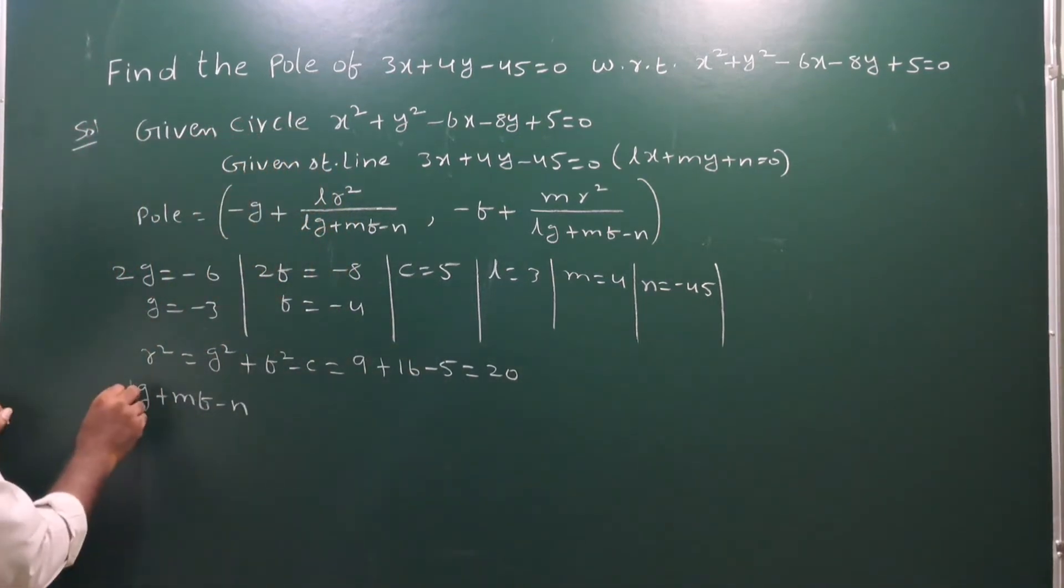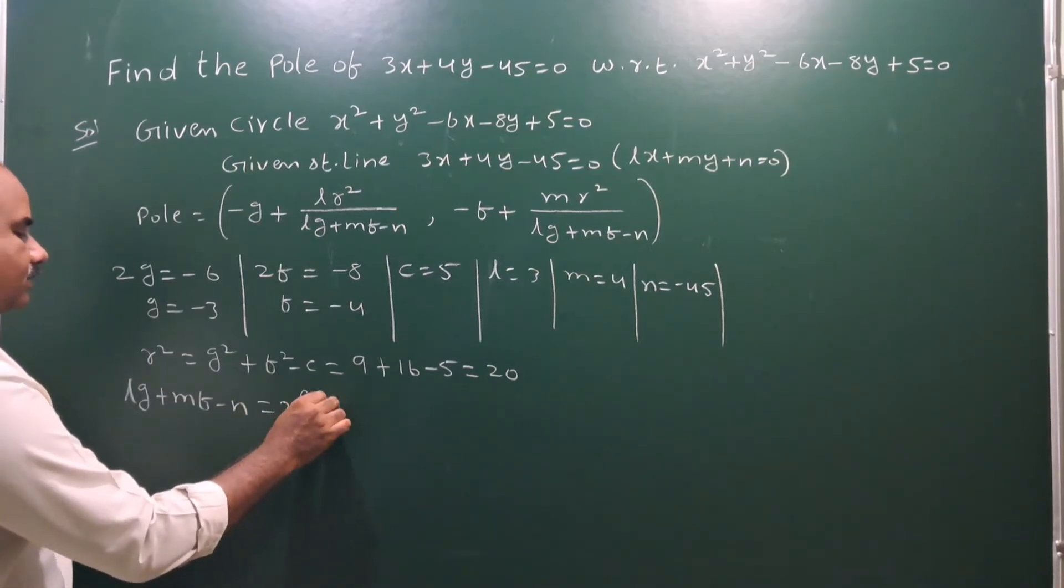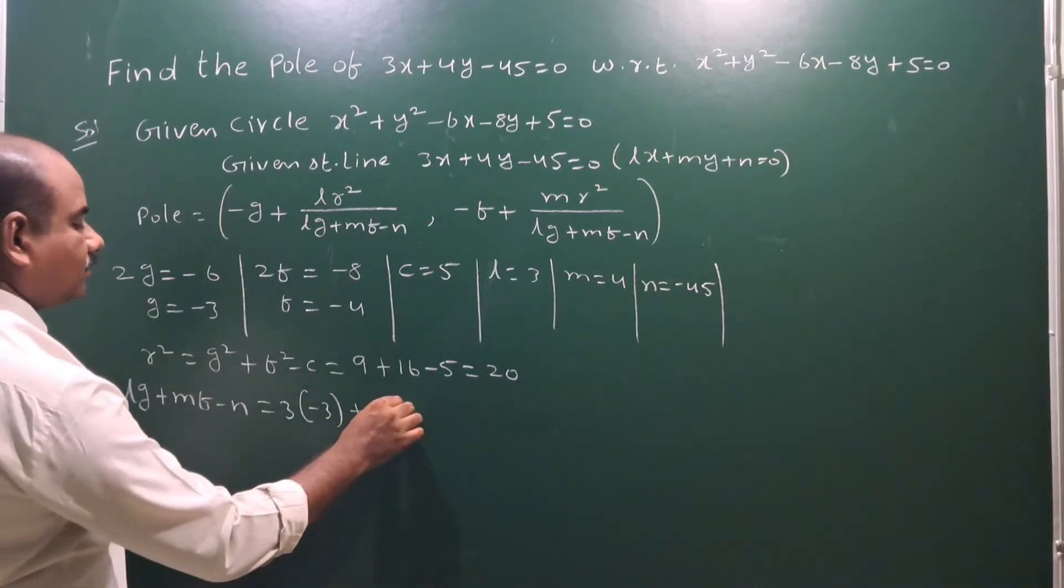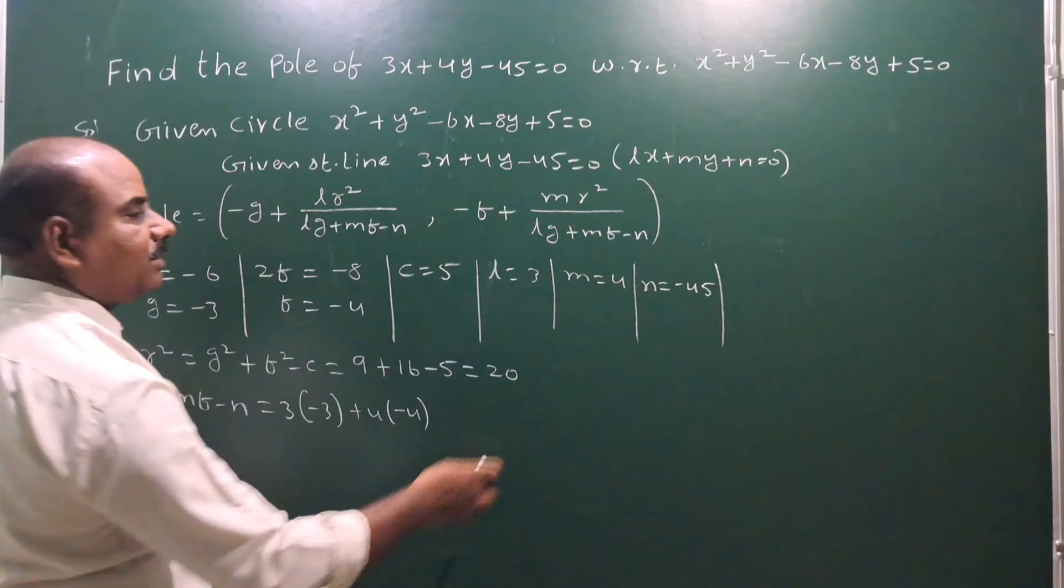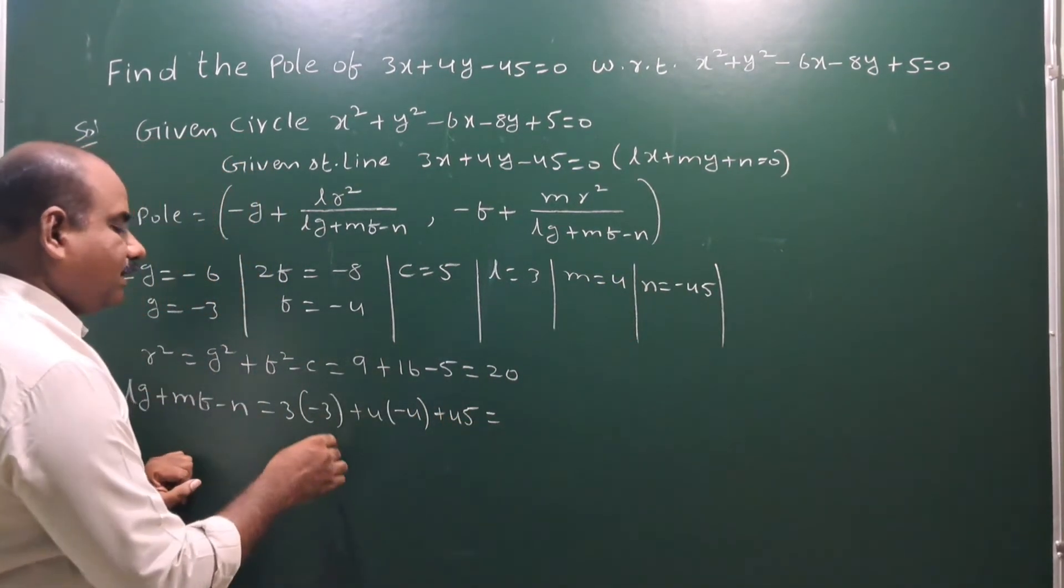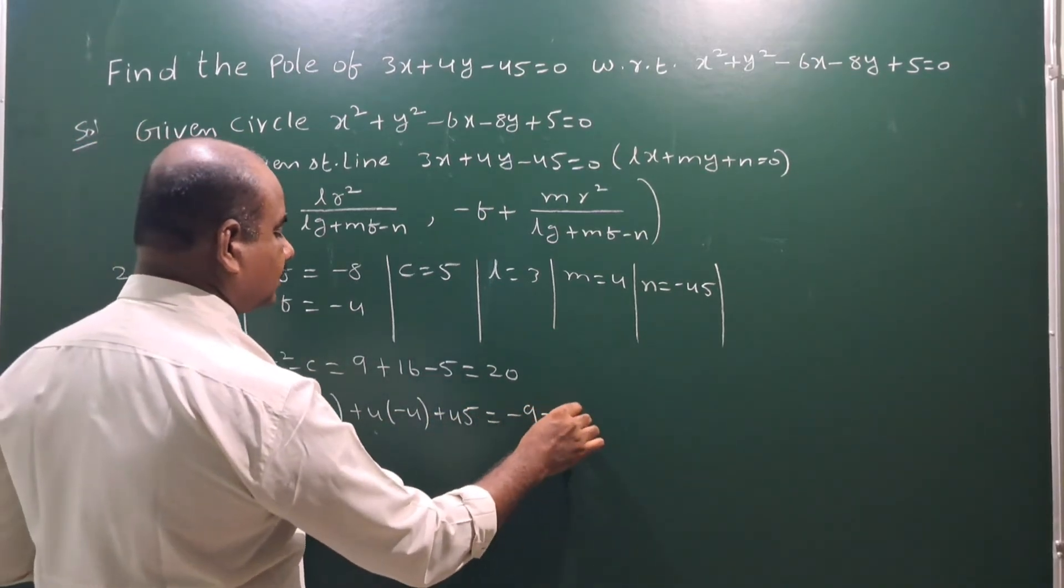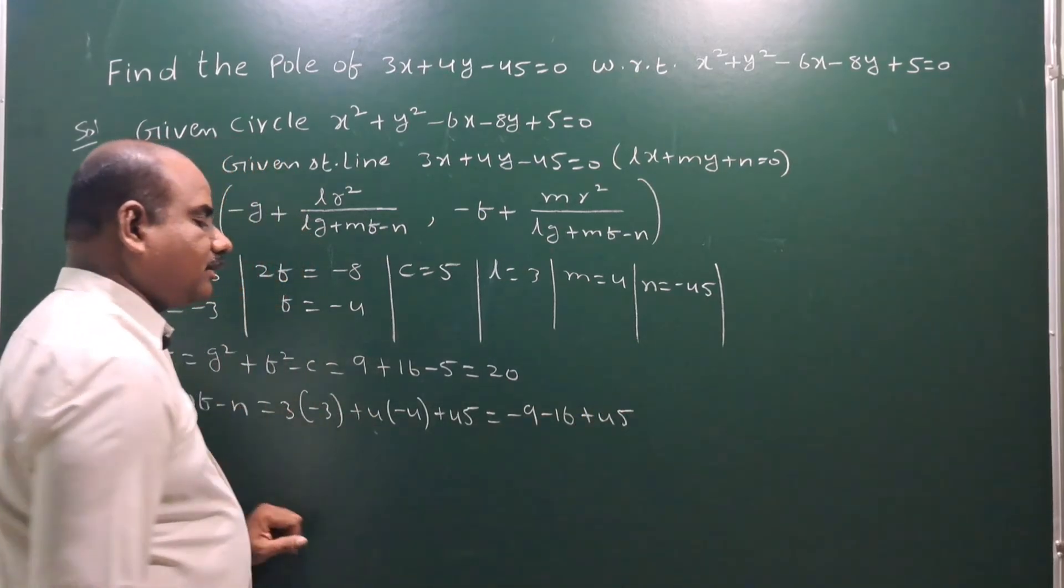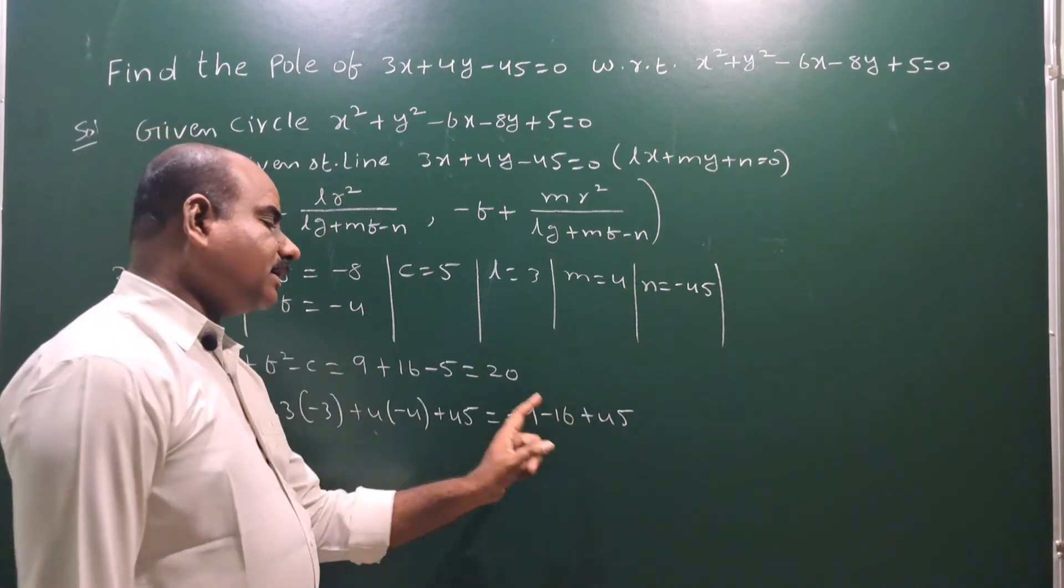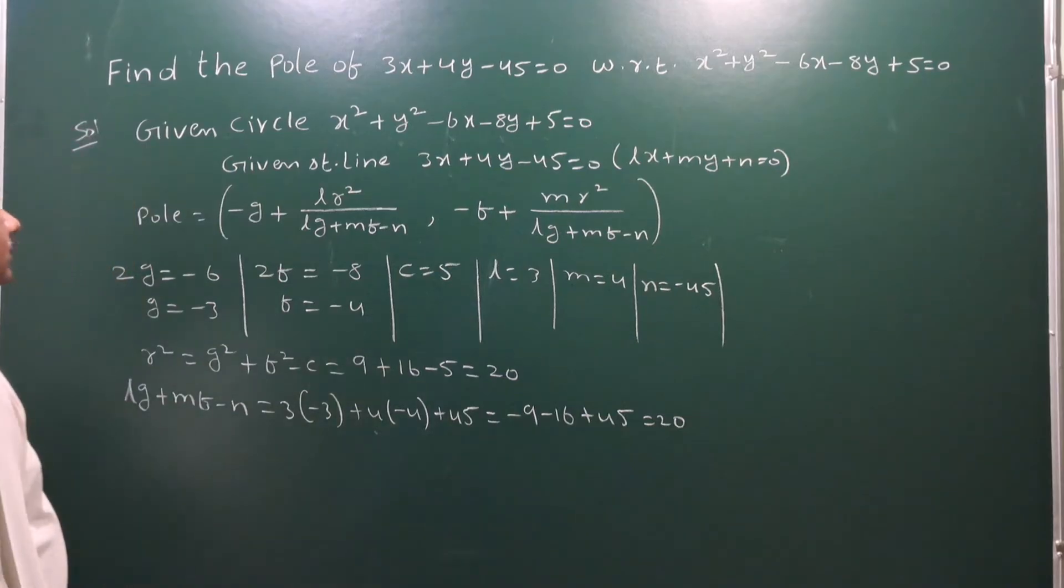So l into 3 into g means minus 3 plus m into 4 into f means minus 4 minus n, minus 45, minus into minus is plus 45. So minus 9 minus 16 plus 45, minus 25 plus 45, which is 20.